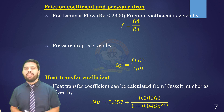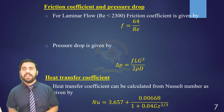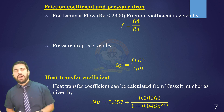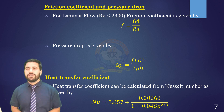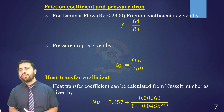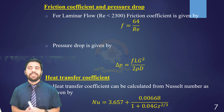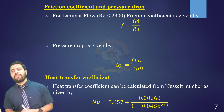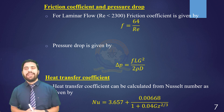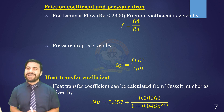For laminar flow having a Reynolds number less than 2300, the friction coefficient is given by the first equation, in which R is the Reynolds number. The pressure drop is given by the second equation, in which f is the friction coefficient, L is the length of the tube, G is the mass velocity, rho is the density of the fluid, and Dh is the hydraulic diameter. The heat transfer coefficient can be calculated from the Nusselt number and is given by the last equation.